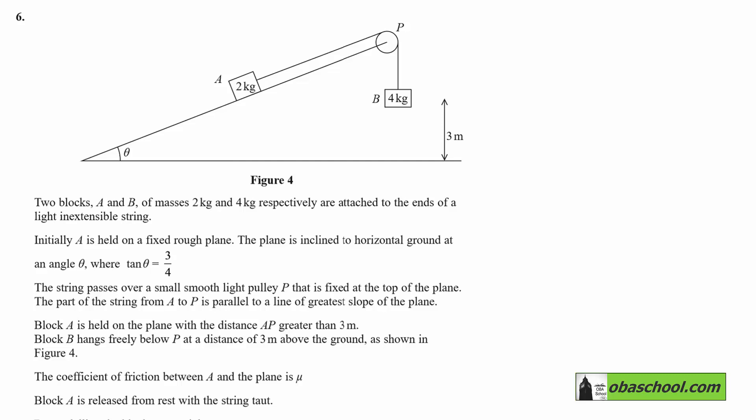Two blocks A and B of masses 2kg and 4kg respectively are attached to the ends of a light, inextensible string. Initially, A is held on a rough, fixed plane. The plane is inclined to horizontal ground at an angle theta, where tan theta is 3 quarters.